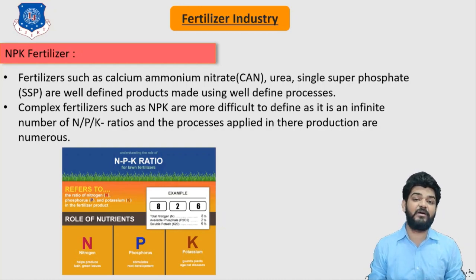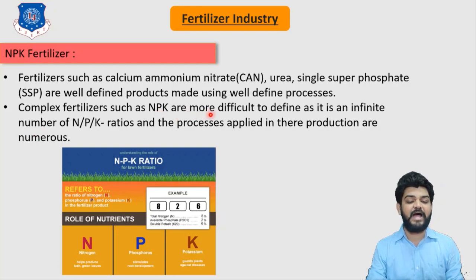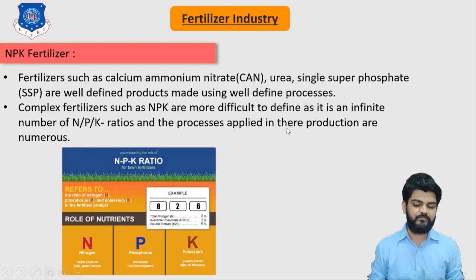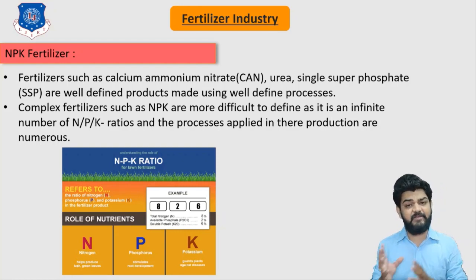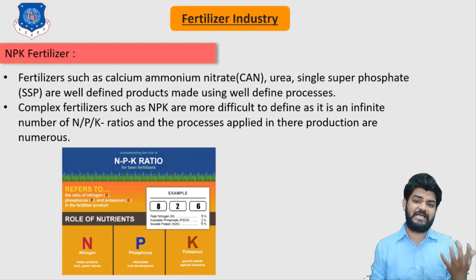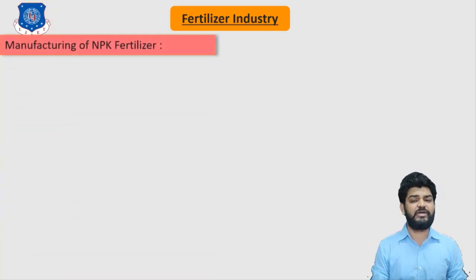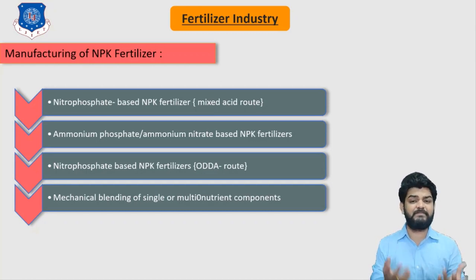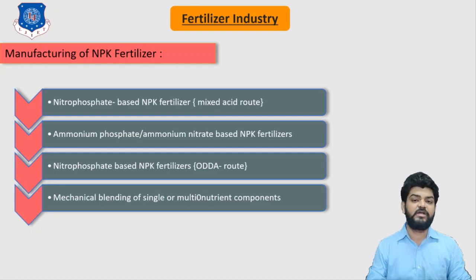Complex fertilizers such as NPK are more difficult to define because this ratio can be changed as per the requirement of the plants, and hence their production methods also differ. There is no single well-defined method to produce NPK. There are four different manufacturing methods used for NPK fertilizers, and the choice of method depends on what type or ratio of NPK is required.